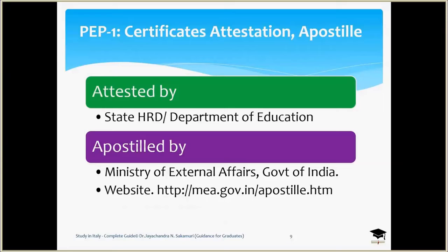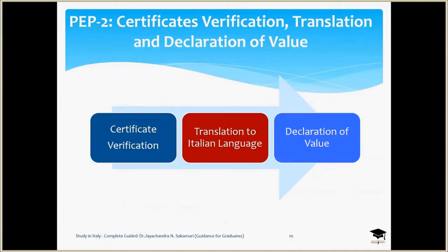The approximate fee for the apostille is around 2,500 rupees for Indian students. Similarly, for students from other countries such as Pakistan, Bangladesh, or EU and non-EU students, they also need to complete attestation and apostille based on the procedure in their home country. Once that is done, you proceed to certificate verification and translation of documents at the Italian Visa Application Center, such as VFS. You drop your certificates there, pay the fee, and they send them to the Italian Embassy for verification.